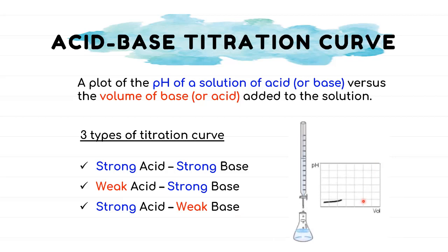This is how a titration curve would look like. The curve would not always start from below as shown here. A low pH indicates you start with an acid as the analyte. Once the reaction has proceeded by adding base as the titrant, you can see the pH starts to increase, indicating the analyte is no longer just acid. Both acid and base are interchangeable as the analyte or the titrant. This steep vertical slope shows the region where the salt is formed.